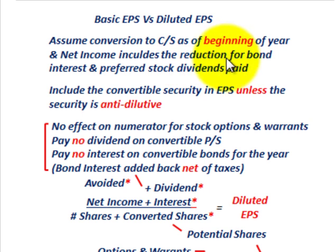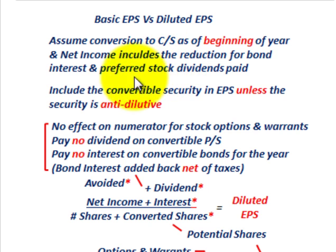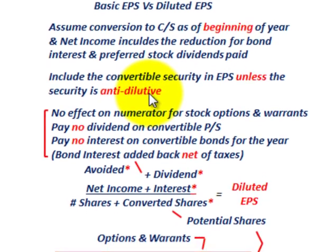Net income would include a reduction for bond interest expense for the year plus any preferred stock dividends that would have been paid. We include a convertible security in the earnings per share calculation unless the security is anti-dilutive.